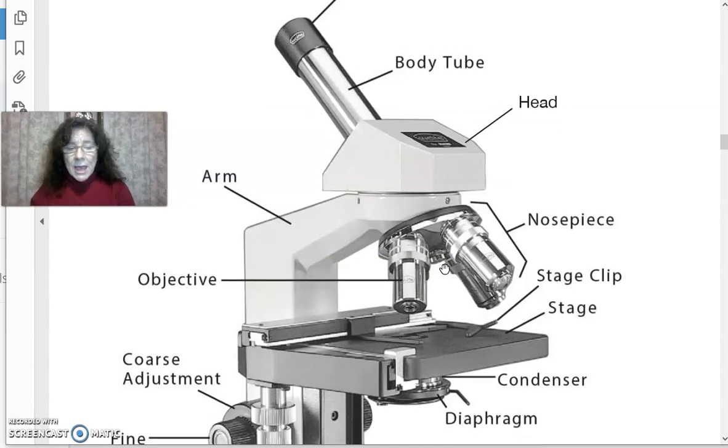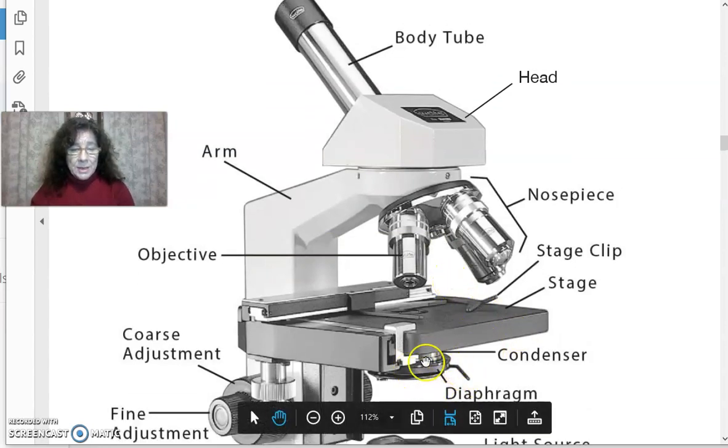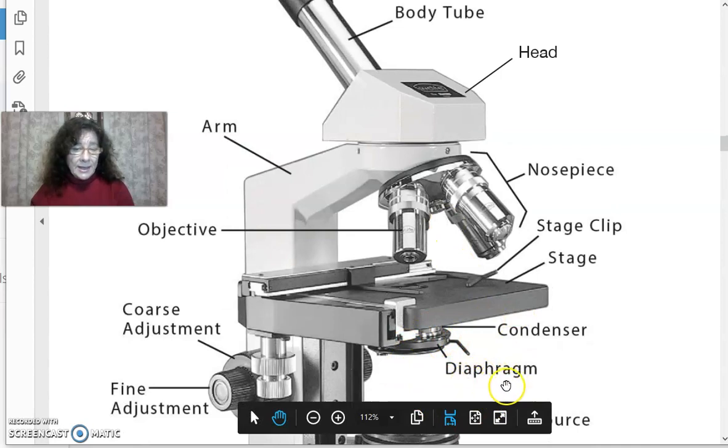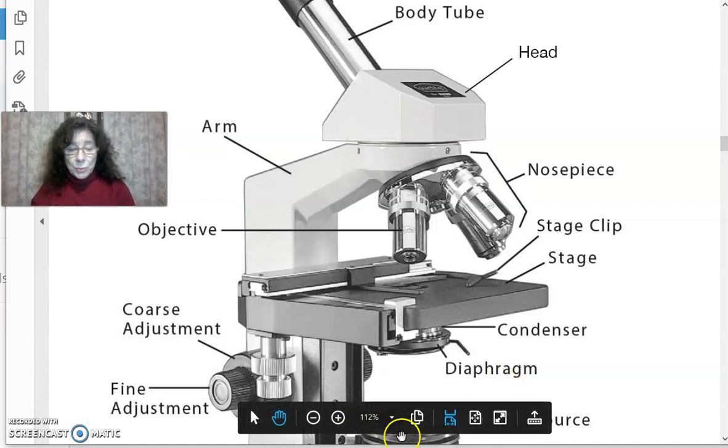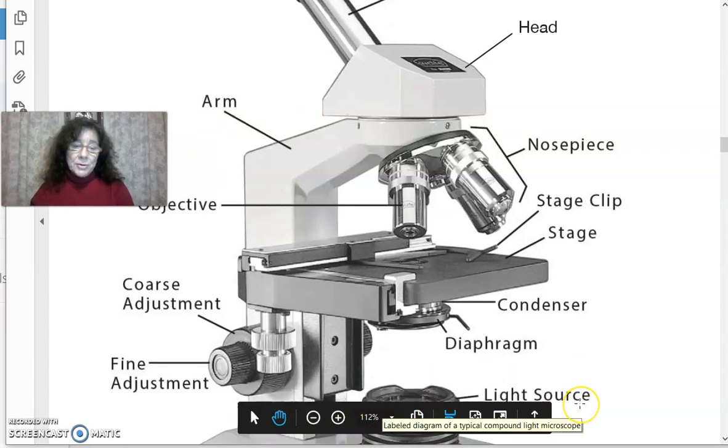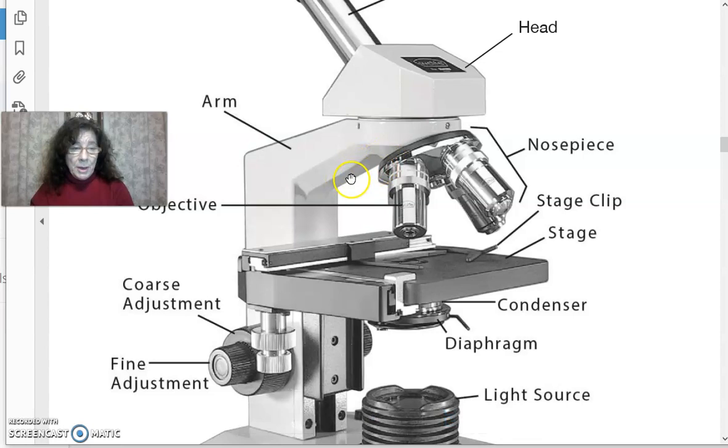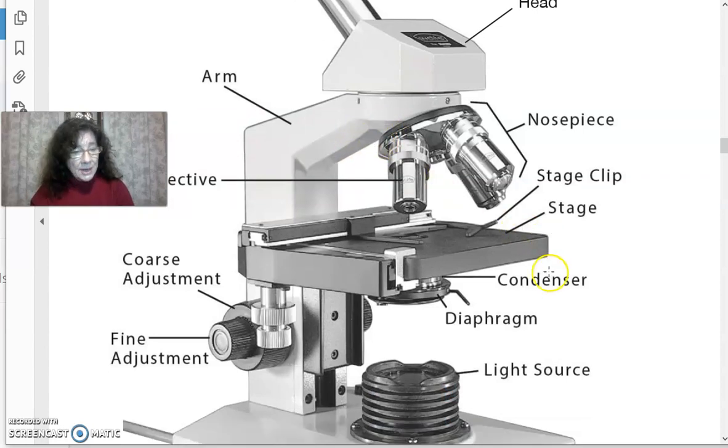You also have a diaphragm. It doesn't look exactly like that, and the diaphragm is for light variability for your compound light source which is underneath the stage. You also have a light source above in yours, and that's a stereomicroscopic view from a light source above.